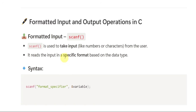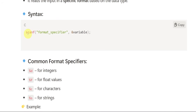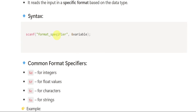Scanf reads the input in a specific format based on the data type — whether integer, floating, or whatever we are giving. The syntax is: scanf("format specifier", &variable); The format specifiers are: %d is used for integers, %f for floating values. Floating values are decimal values like 2.09.